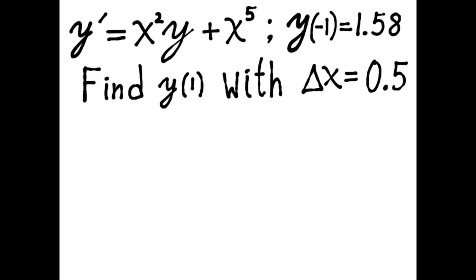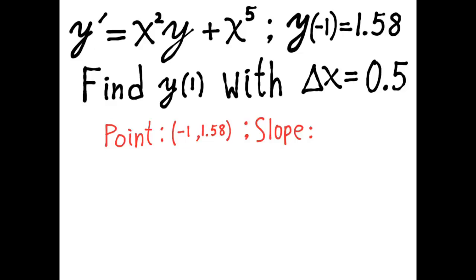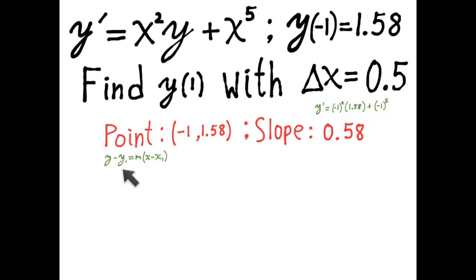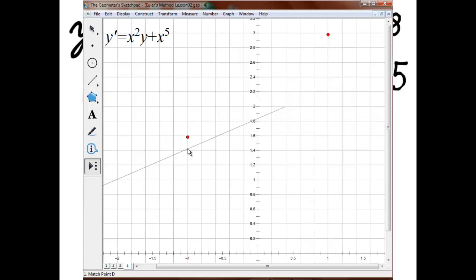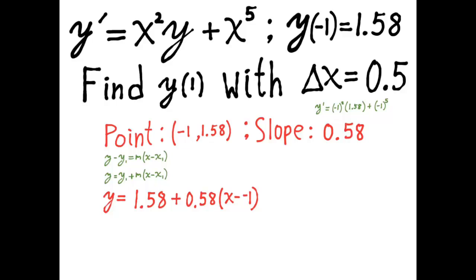The first thing we do is use the information given. If y of negative 1 equals 1.58, then we know the point we're starting at, and we need the slope to find the equation of the line. We get the slope from the differential equation — we just compute x squared y plus x to the fifth using that point. So now that I know the point and the slope, I can use the point-slope form for the equation of a line. The formula I get is y equals 1.58 plus 0.58 times (x minus negative 1).